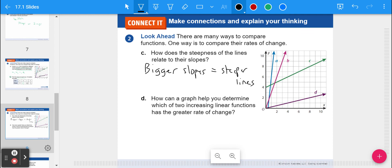Question D, how can the graph help you determine which of two increasing linear functions has a greater rate of change? Look for which has the steepest line. So if the steeper lines have a greater slope, just look for the steepest line. So steepness really does correlate to that rate.